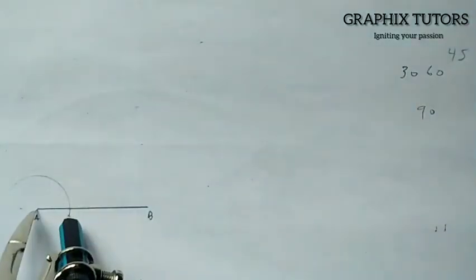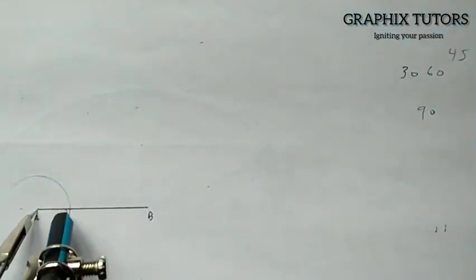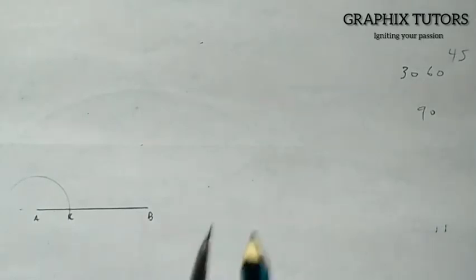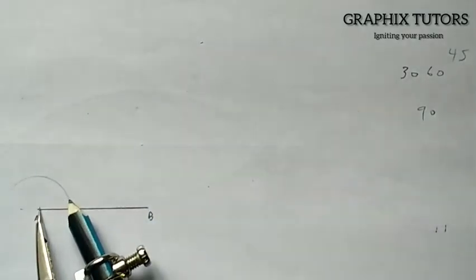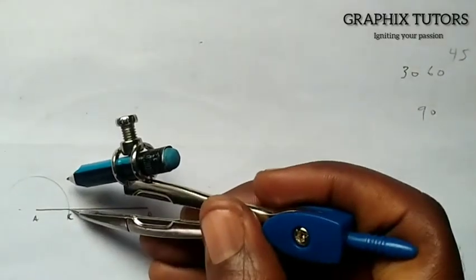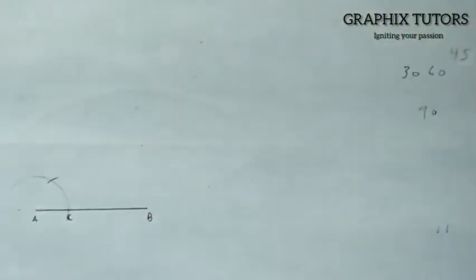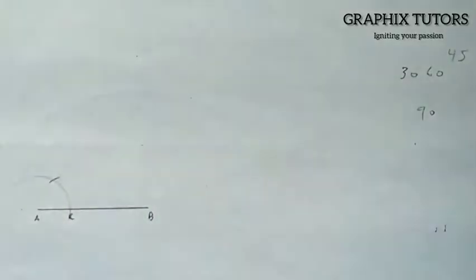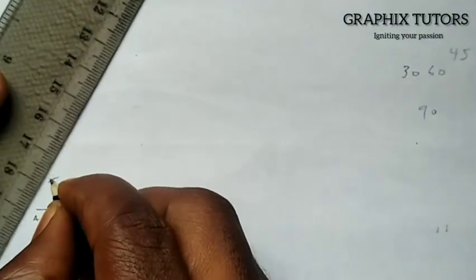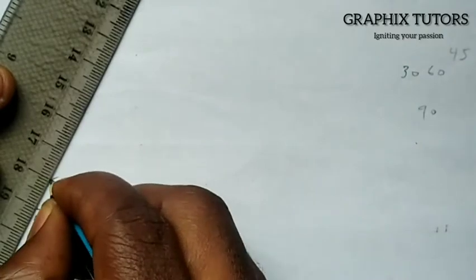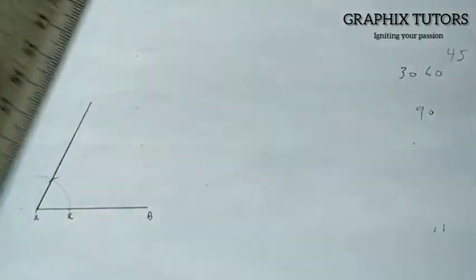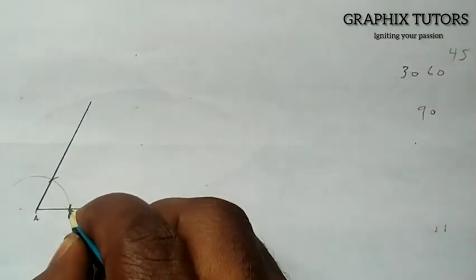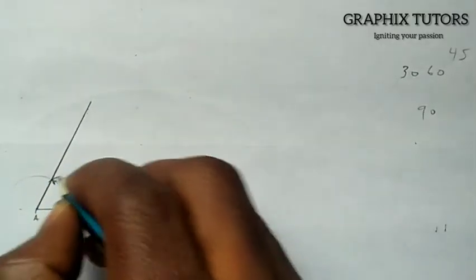Let the arc cut the line AB — call that point C. Without adjusting the radius, place the compass at point C and strike another arc. Where it cuts the first arc is where your 60-degree angle lies. Draw a line from A through that intersection point and the angle between the baseline and that line is angle 60 degrees.